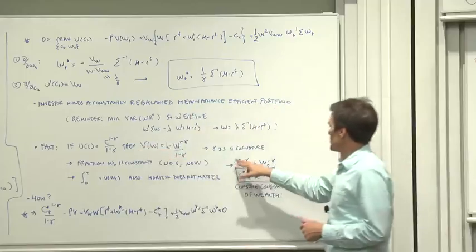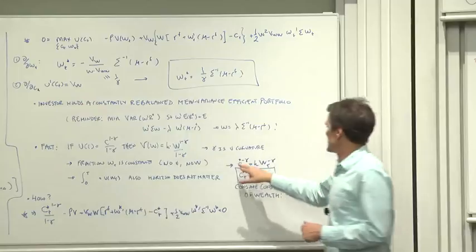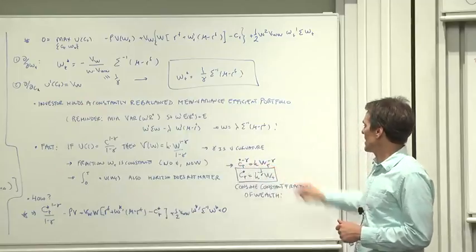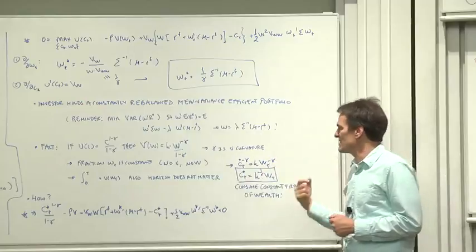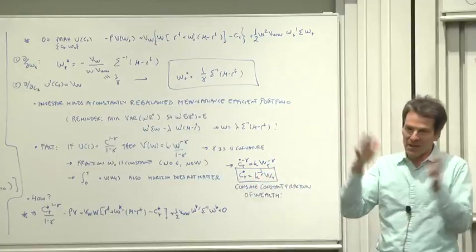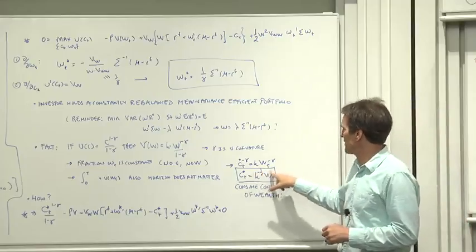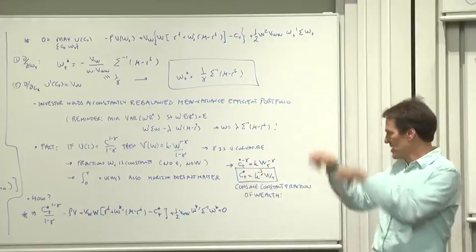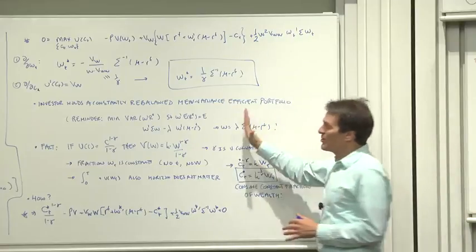With that value function, we also know the consumption rule. Now U prime of C is V_W. It tells us that C to the minus gamma is W to the minus gamma, or the consumer should consume a constant fraction of wealth. There's a K here, which is a huge expression which I didn't give you. It's just parameters, but it says there's a constant fraction of wealth. As wealth goes up and down, consumption should go up and down too. Beautiful results.